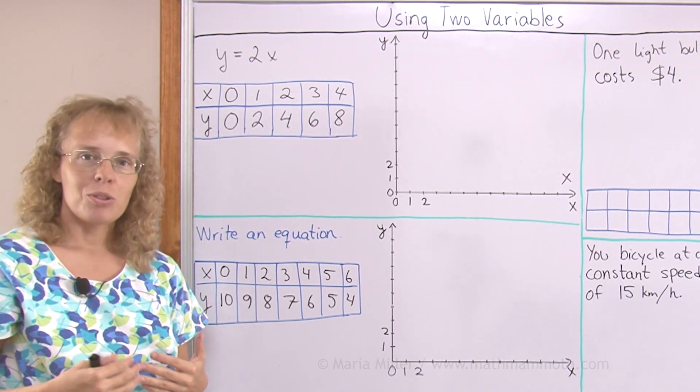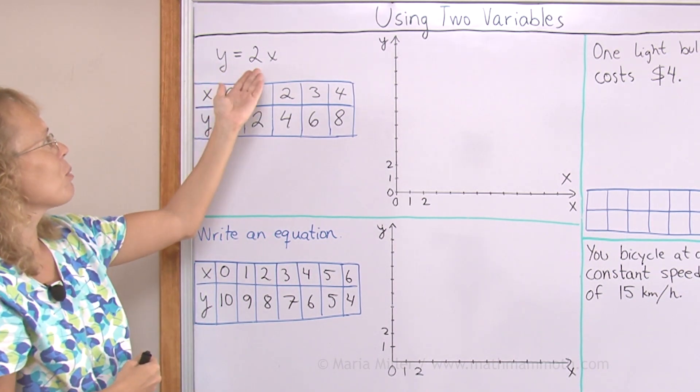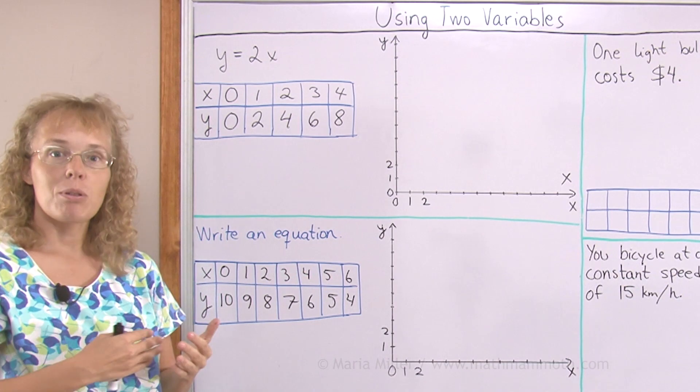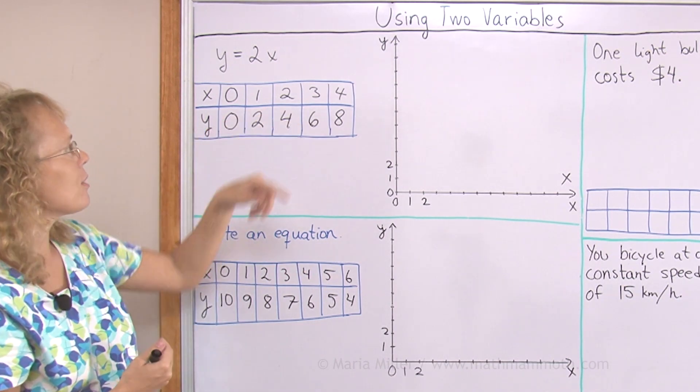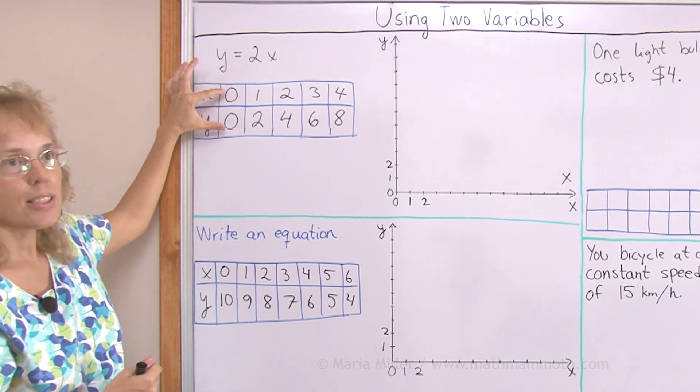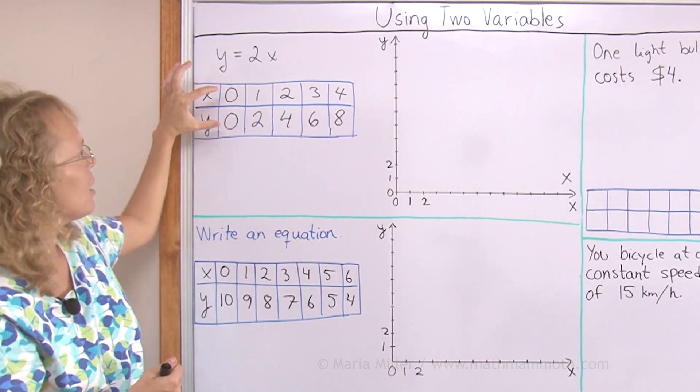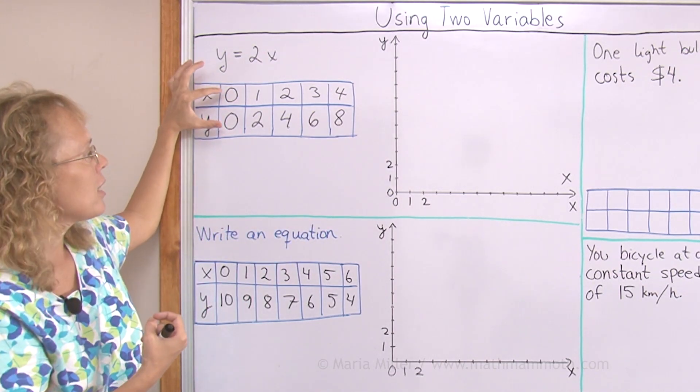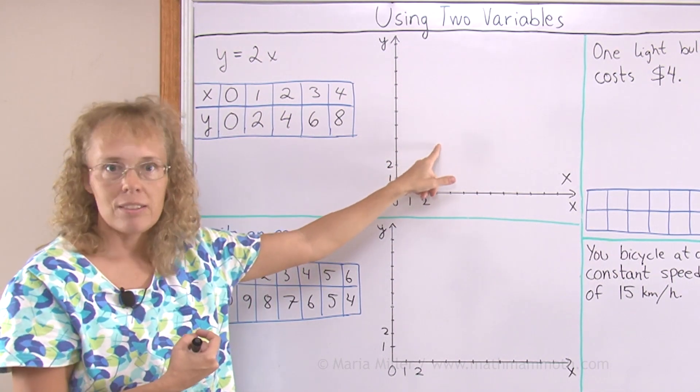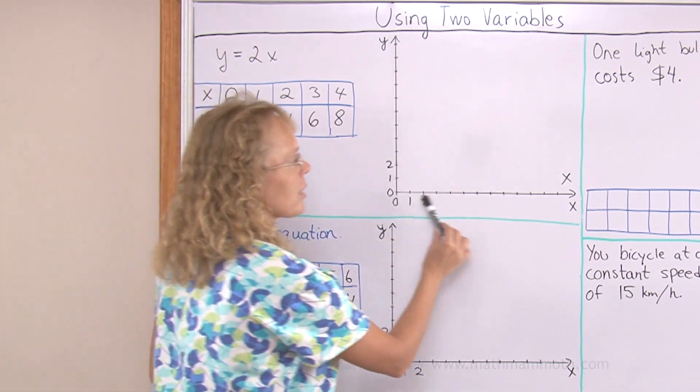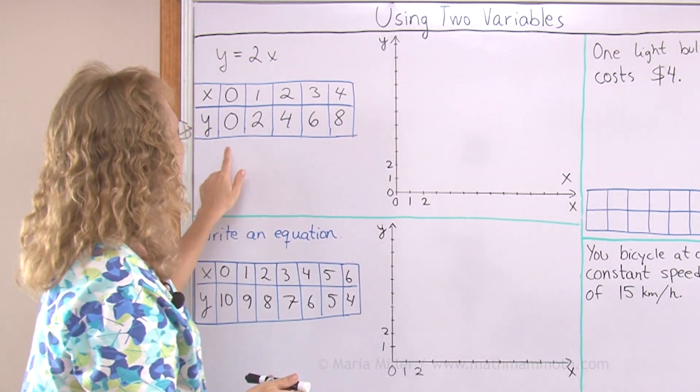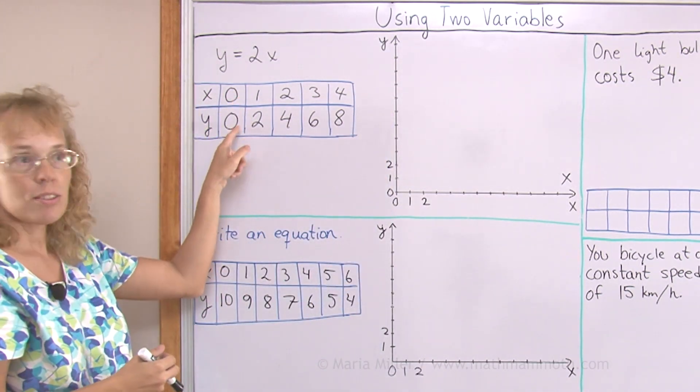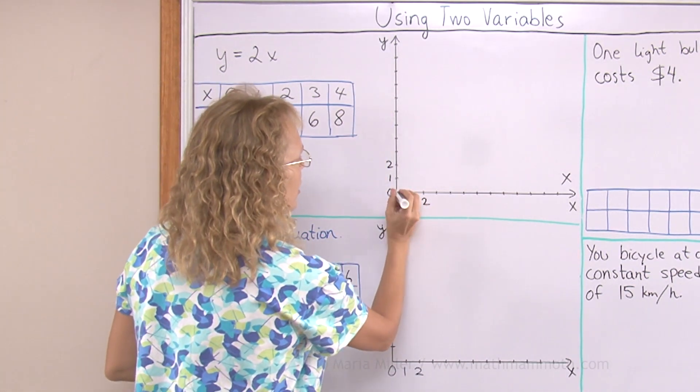But the other thing we often do with this kind of equation where there's two variables is we will plot these points here. Each number pair is one point. Because if you have a pair of numbers you can think of them as coordinates and you can plot them in the coordinate grid where I have my x coordinate going this way and y coordinate going that way. My first point here is 0, 0. So it is the origin here.